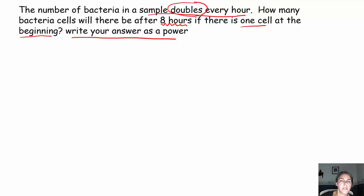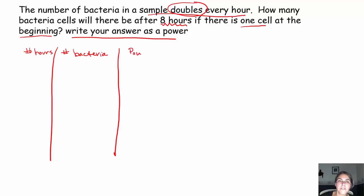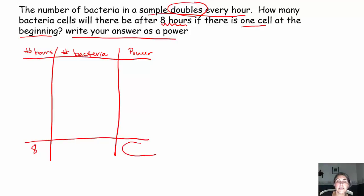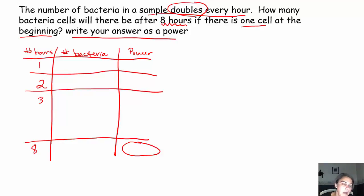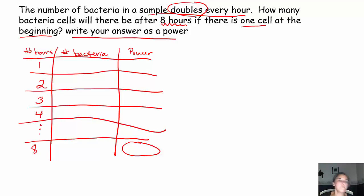Sometimes I find tables help me organize my information. I know they're talking about a certain number of hours and a certain number of bacteria cells, and they want my final answer as a power. I'll look at what happens after one hour, after two hours, after three hours, maybe even after four hours, and then dot dot dot — hopefully I'll see a pattern and figure out what's happening after eight hours.